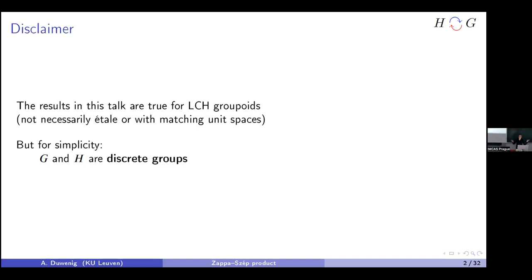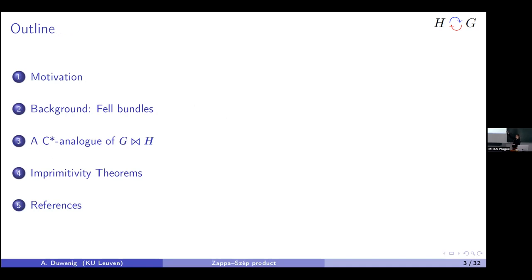It's just a lot more complicated — everything blows up with 20 more properties to carry around. So this is the outline of my talk. I'll start by motivating the construction, then introduce Fell bundles with as many examples as possible so it's not too technical. Then comes the construction — this little bow tie denotes the Zappa-Szép product — and I'll give you the construction in the C*-algebra world.